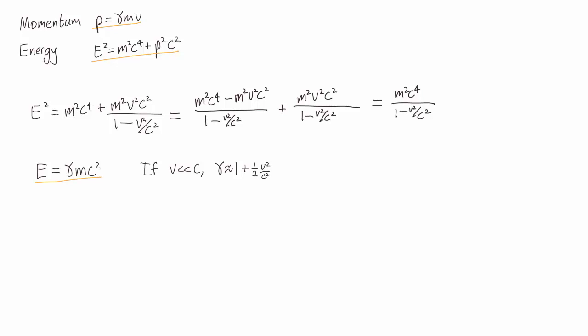And if we substitute that in, you get e equals mc squared plus a half mv squared. So again we have the rest energy as well as a term that we'd recognize as the kinetic energy. And so again we see that when velocity is much smaller than c, this reduces to an expression that we're familiar with in our everyday life.